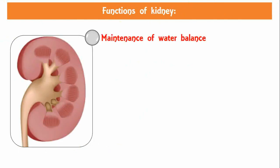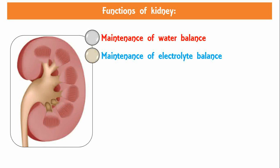Maintenance of water balance: kidneys maintain the water balance in the body by conserving water when it is decreased and excreting water when it is in excess. Maintenance of electrolyte balance, especially sodium, is in relation to water balance. Kidneys retain sodium if the osmolarity of body water decreases and eliminate sodium when osmolarity increases.